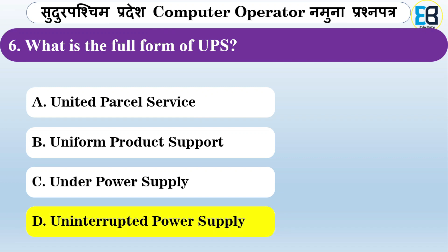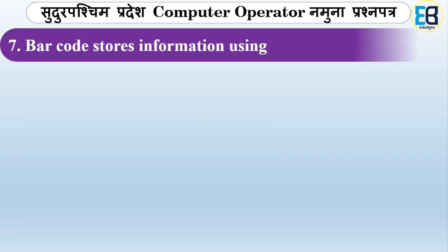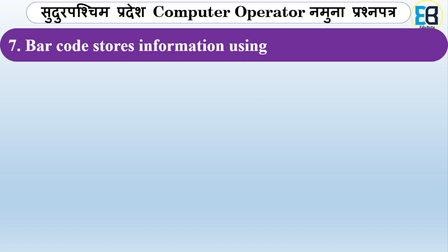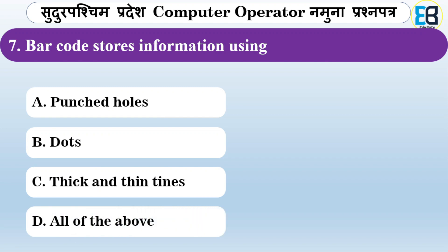Barcode stores information using what? The answer is thin lines — a barcode stores information using thin lines. The data is represented and stored on the numbers through those thin lines.